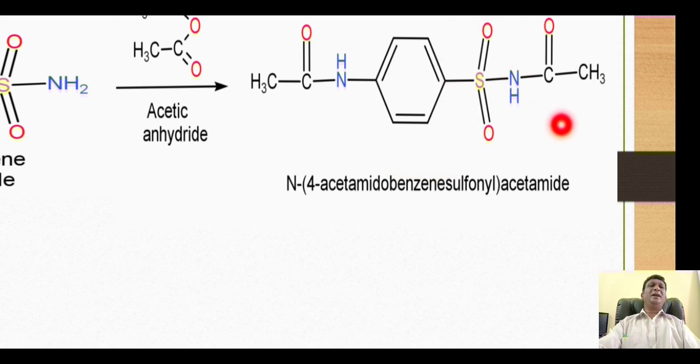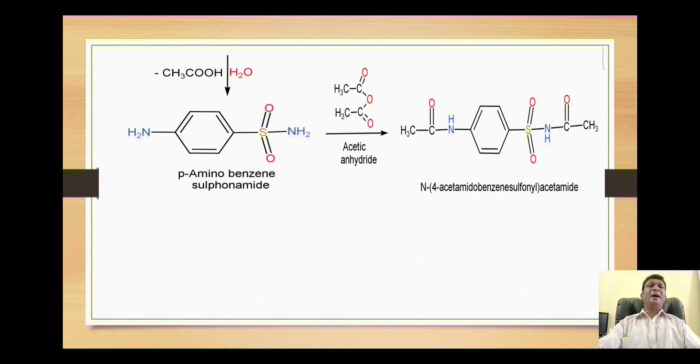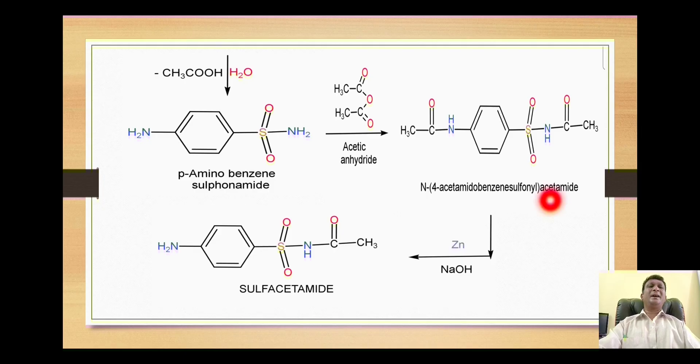This diacetyl derivative is then reacted with zinc in the presence of sodium hydroxide. This condition, zinc and NaOH, brings selective deacetylation, that is removal of the acetyl group from the amide which is obtained from carboxylic acid.